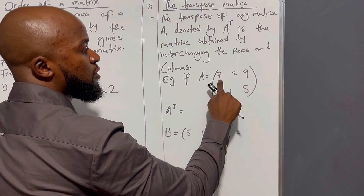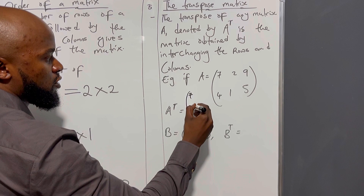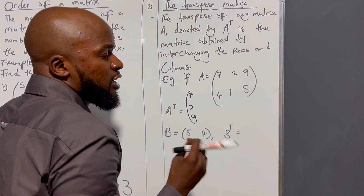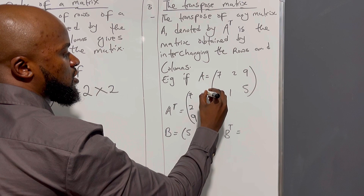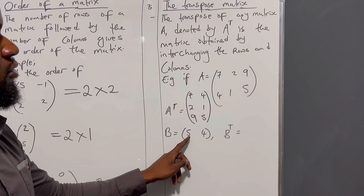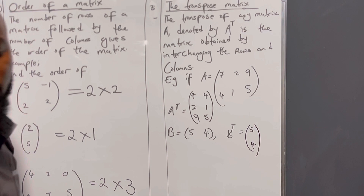In simple terms, you are changing a row to become a column. So the row 4, 1, 5 also becomes the column 4, 1, 5. For matrix B with elements 5 and 4, when we transpose it, that row becomes a column: 5 and 4. Easy — this is typically one mark. Let's now move on to addition and subtraction.